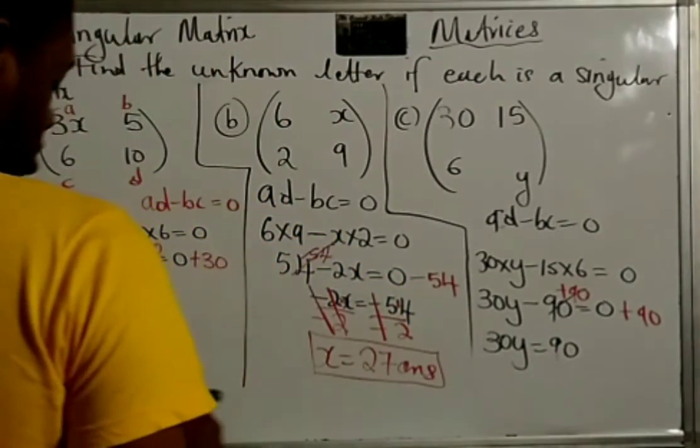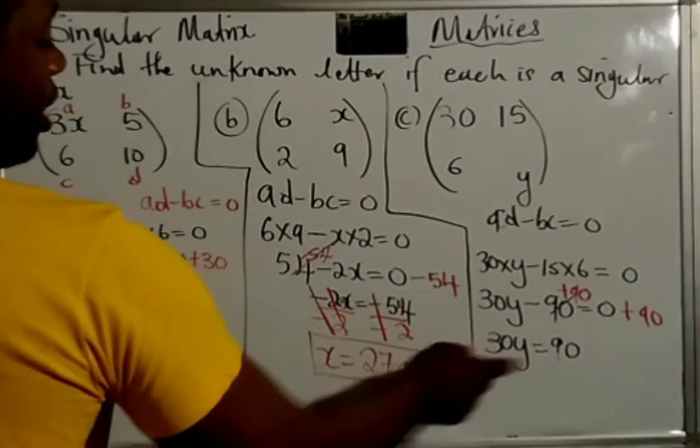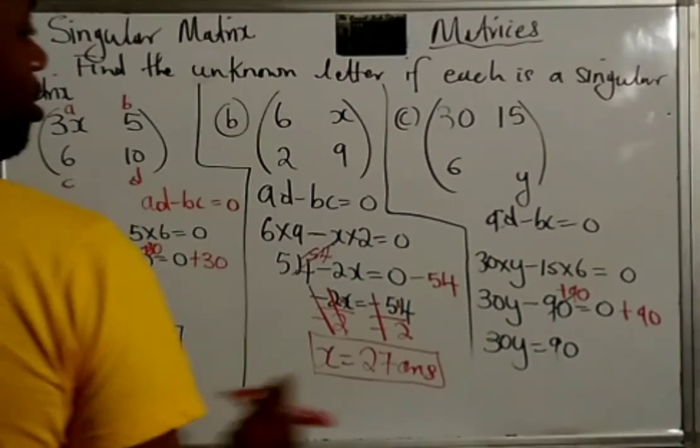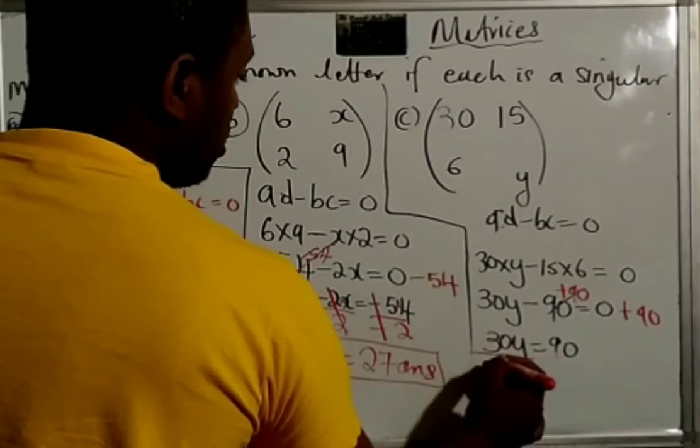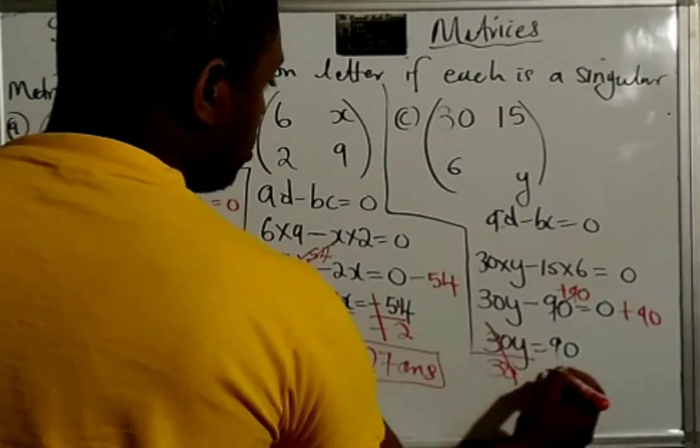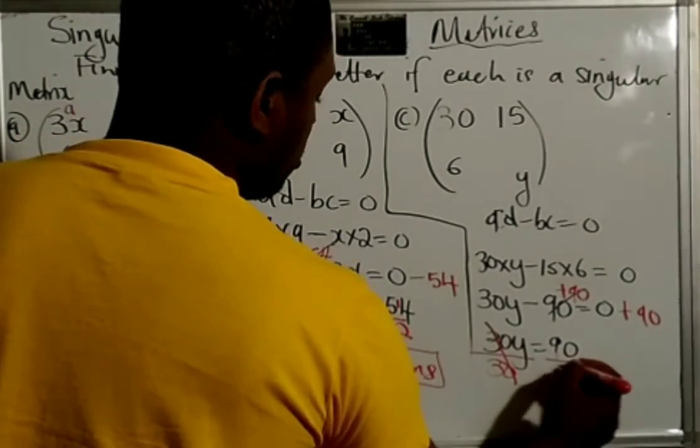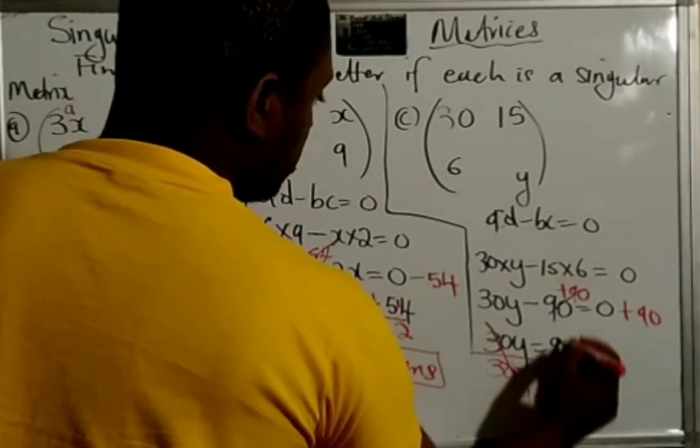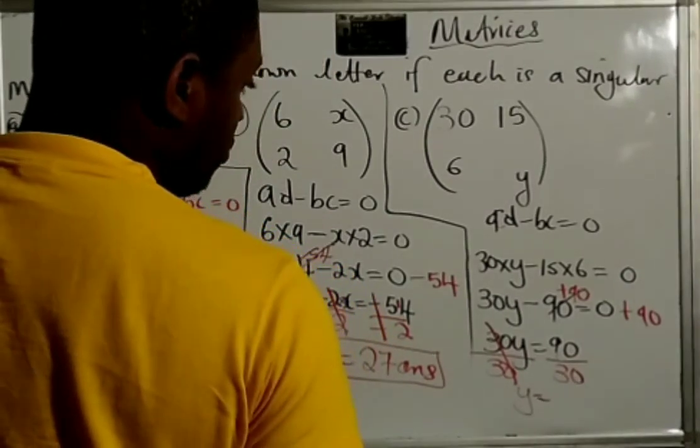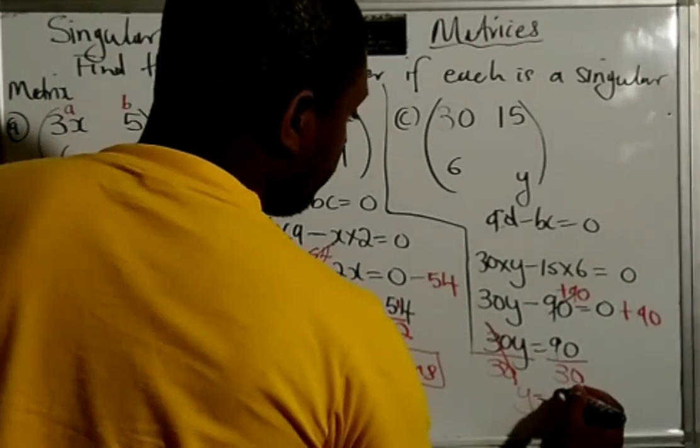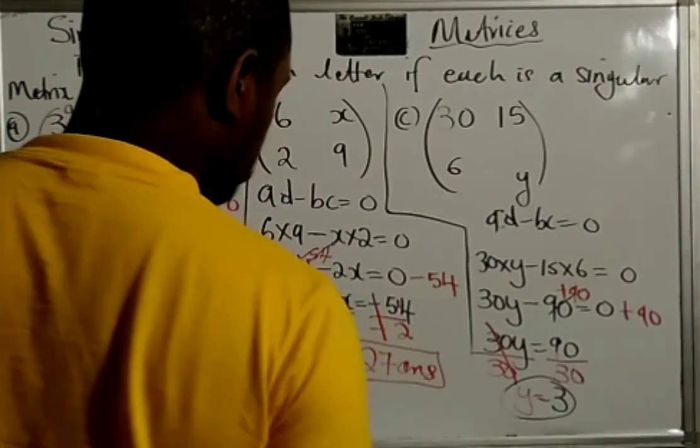And now we can simply, this is saying 30 times Y. So, we take the inverse of multiplication, which is division. If you don't know about this, check out my channel further. So, 90 divided by 30 would give us 3. So, therefore, the value of Y is 3.